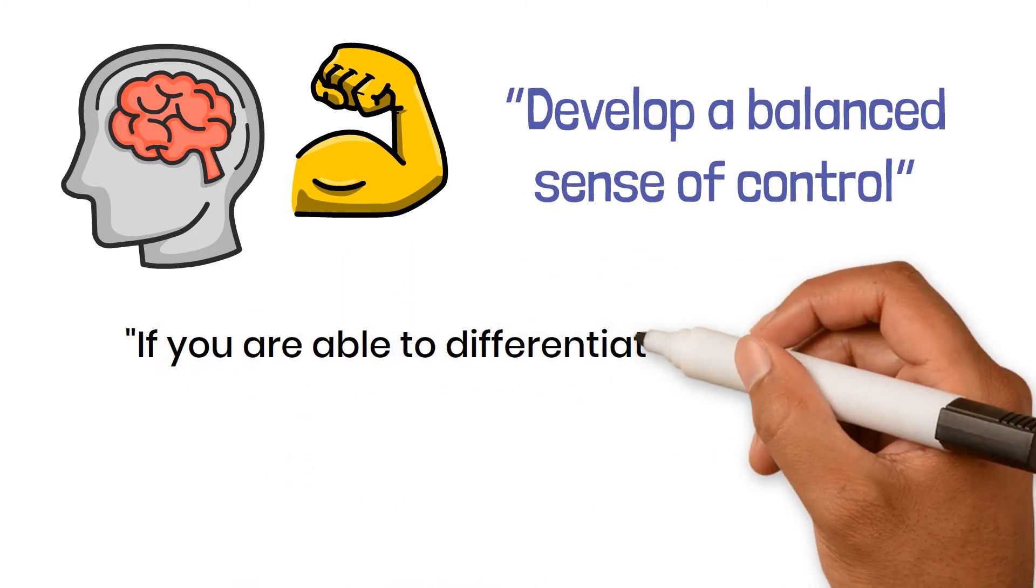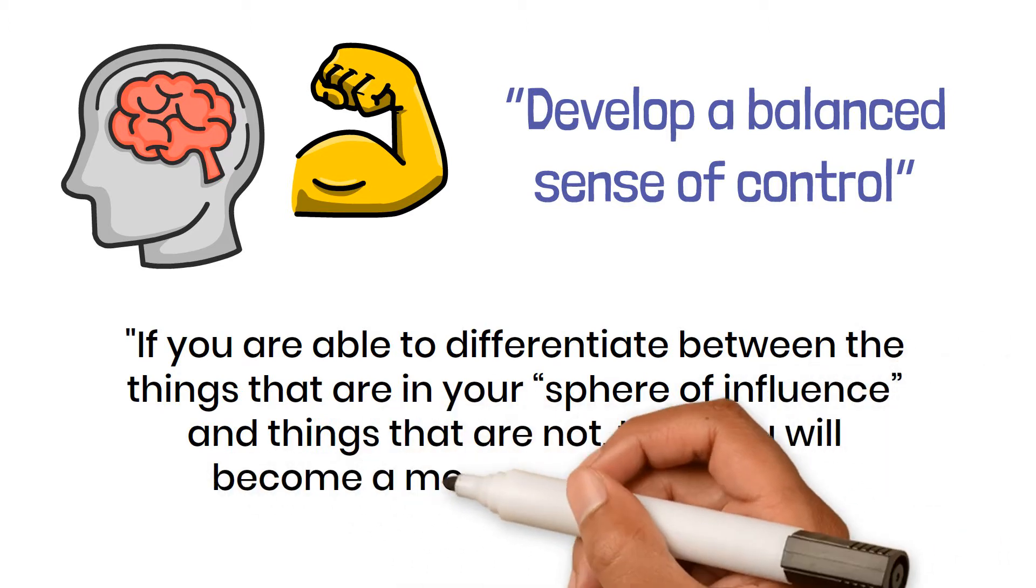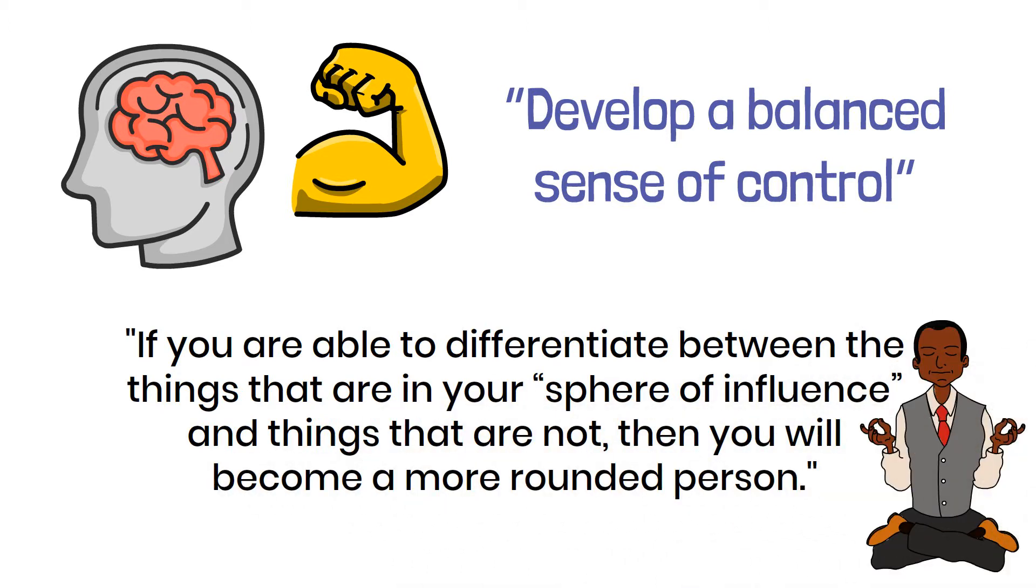She suggests that if you are able to differentiate between the things that are in your sphere of influence, and things that are not, then you will become a more rounded person.